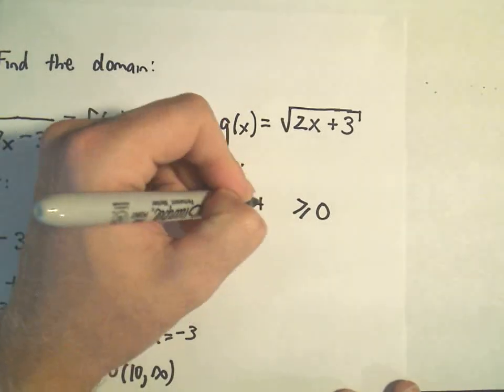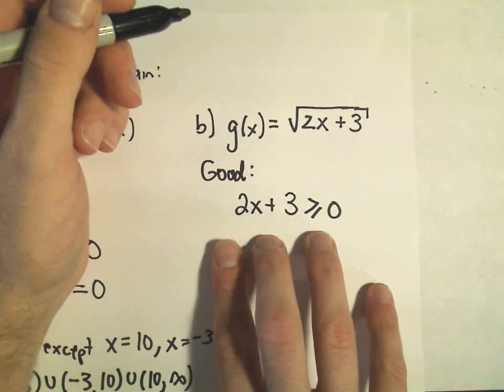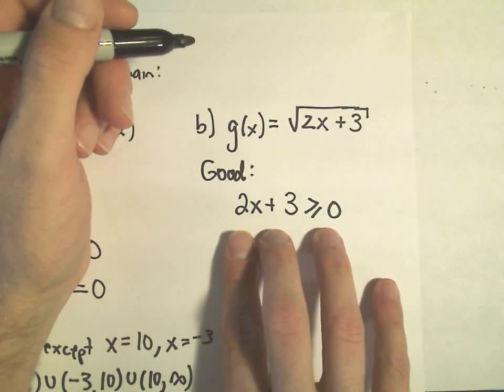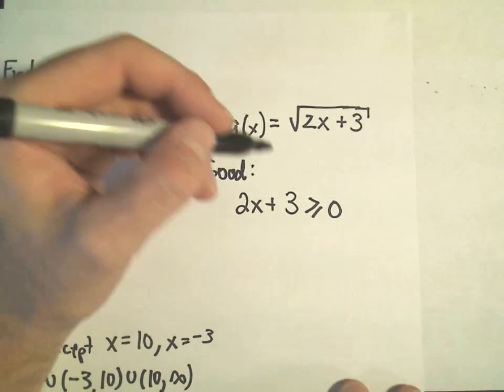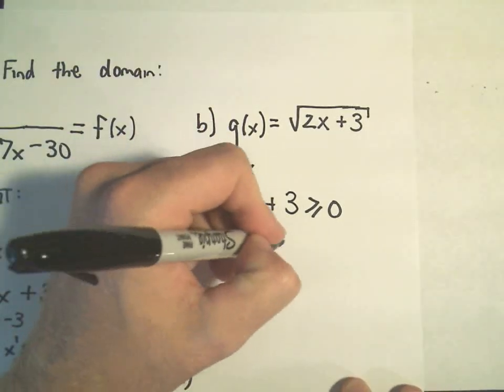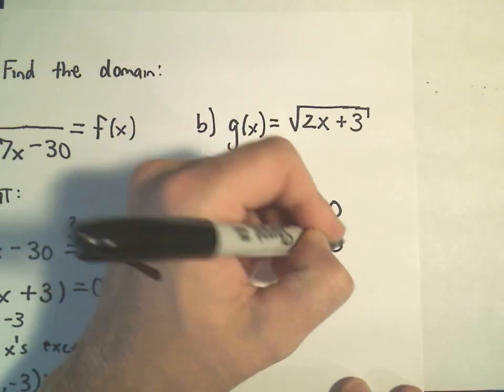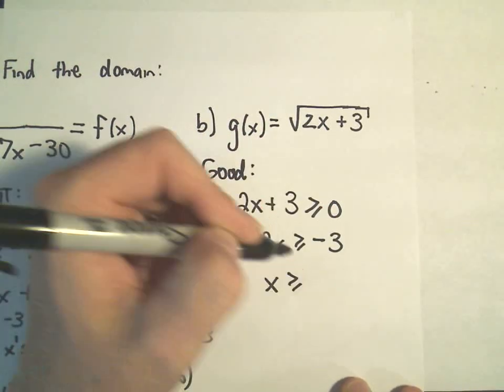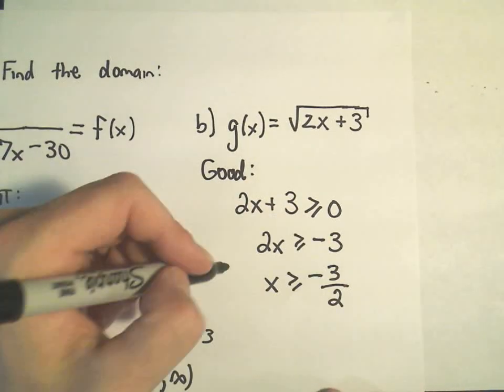Well, 2x plus 3, that's what's underneath the square root. So this now produces an inequality I have to solve. Fortunately, this is just a linear inequality, so it's not too bad. I can subtract 3 from both sides and get 2x greater than or equal to negative 3, divide by 2, and it says x needs to be greater than or equal to negative 3 halves.